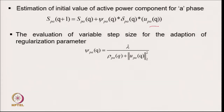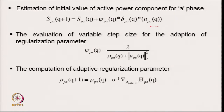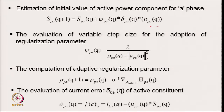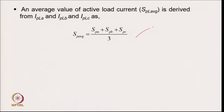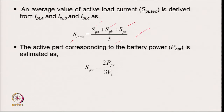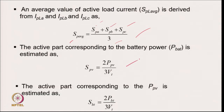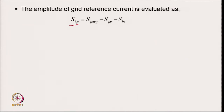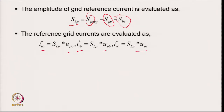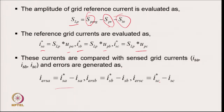We extract the fundamental component from the load current — which may be unbalanced or polluted — calculating the fundamental component from all three phases a, b, c. We get the fundamental component for all three phases, which may be unequal under unbalanced load, so we take the average for load balancing. We get the amplitude of the supply current as load current minus PV power minus battery power, giving the power flowing to the grid. Multiplying by the template gives the reference grid current, enabling current control of the voltage source converter with improved power quality on the grid side.